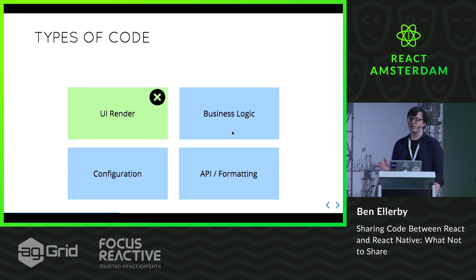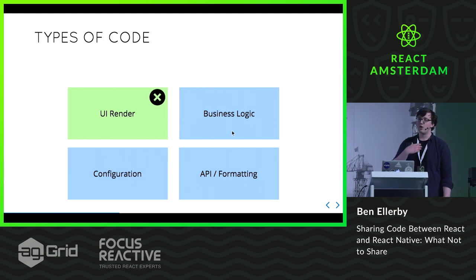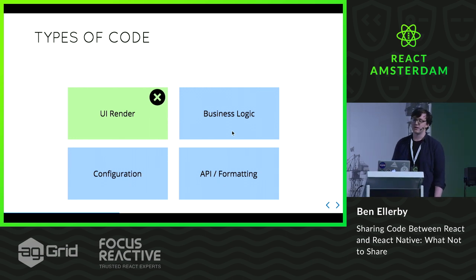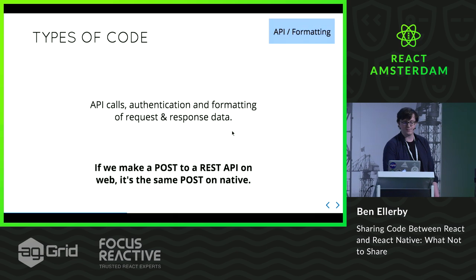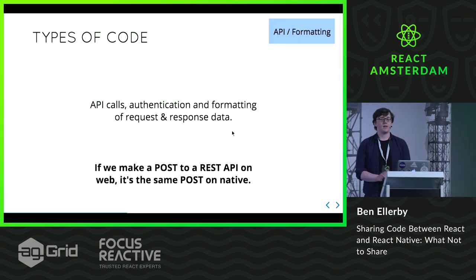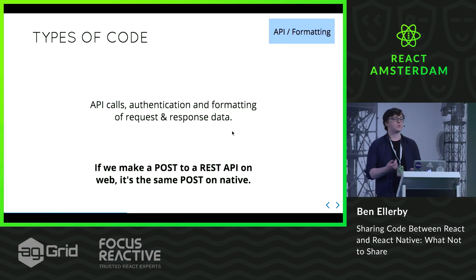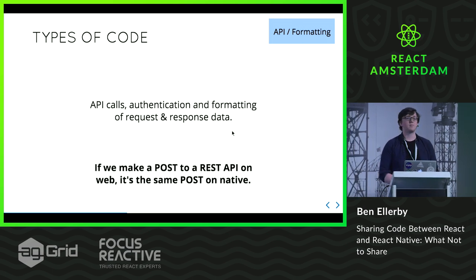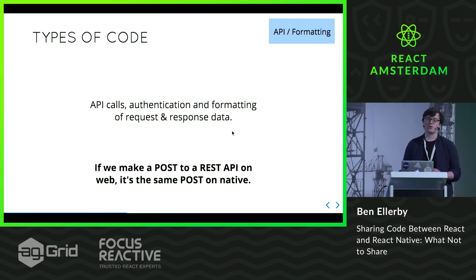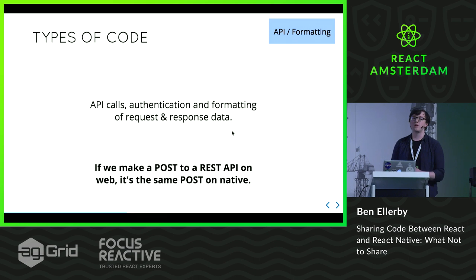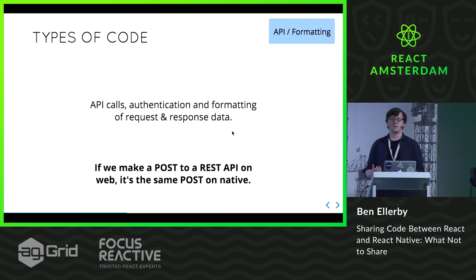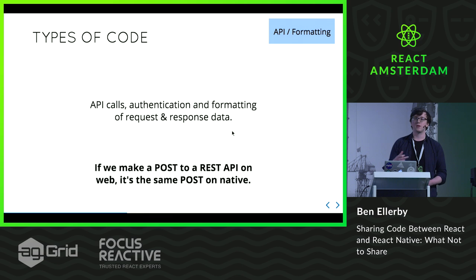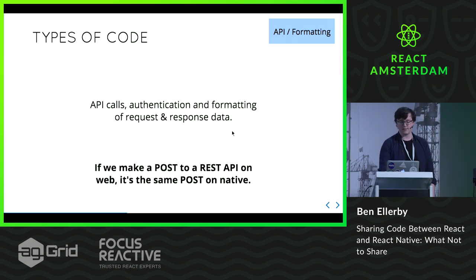Going back to the breakdown of different types of code: as a team we decided, after several proof of concepts and a lot of debate, that UI render code — specifically the stylistic parts of your render method — we shouldn't try to share across web and native. But business logic, configuration, and API formatting are all candidates to be shared. API calls, authentication, and the formatting of requests and responses, be that a RESTful API or an Apollo query, are all shareable. They're not render environment specific — if we make a POST to a REST API on web, it's the same as making a POST on native.